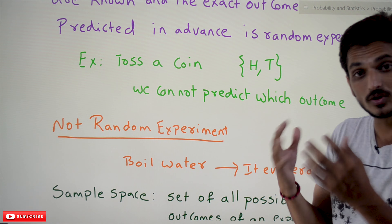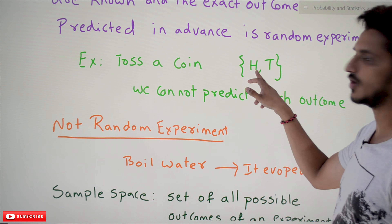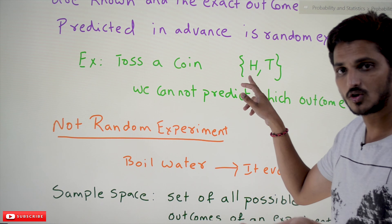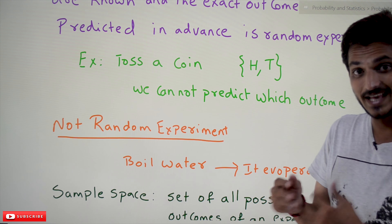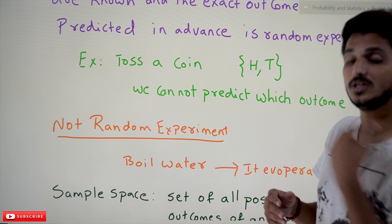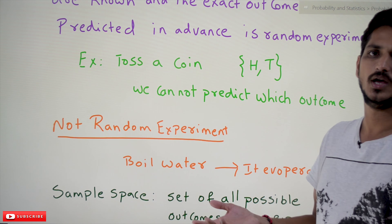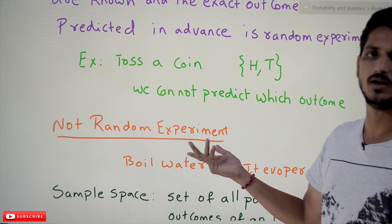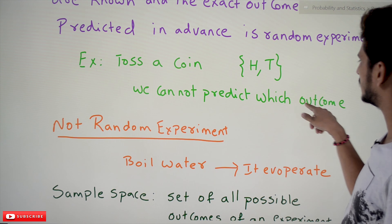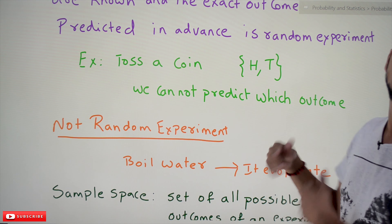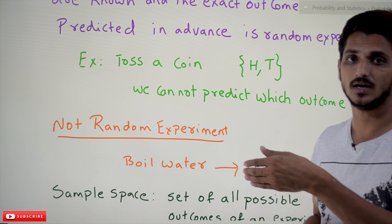With an example you are going to understand better. If you toss a coin, what are the possible outcomes you are going to get? When you toss a coin it may show up head, it may show up tail. But what is the exact output it is going to come? We don't know. It may show up head, it may show up tail — these are the possible outcomes. We cannot predict which outcome is going to come. That is what random experiment means.